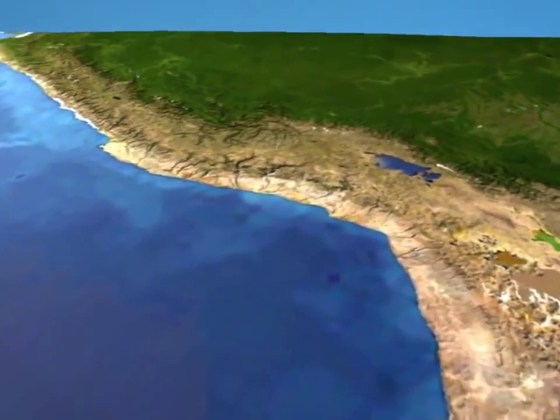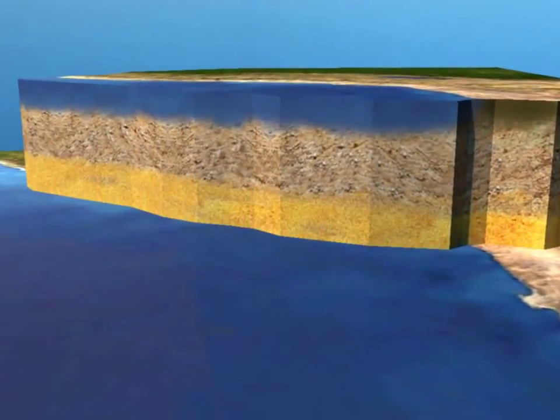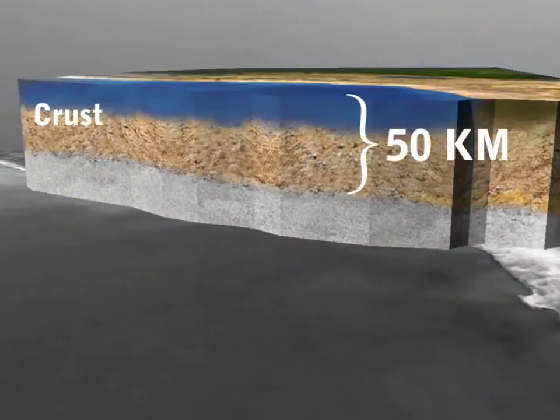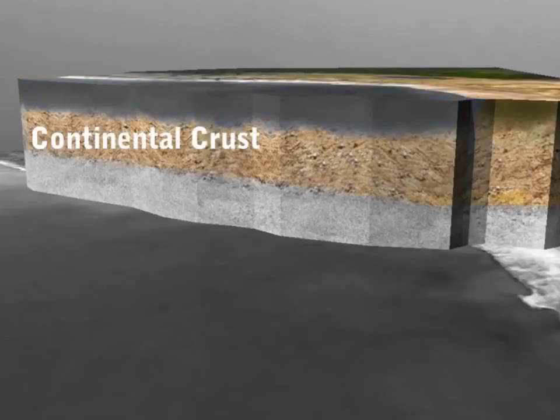In reality, the crust of the earth is a very thin layer. It is only 50 kilometers deep. The crust floats on top of the outer layers of the earth. The oceanic crust is thinner than the continental crust.